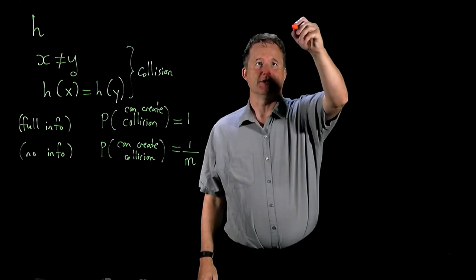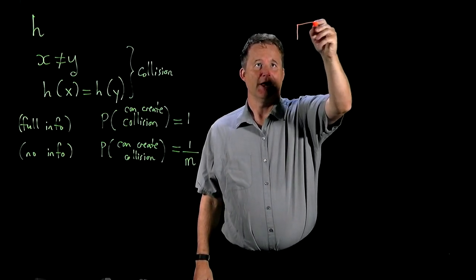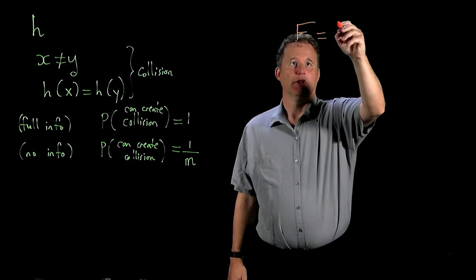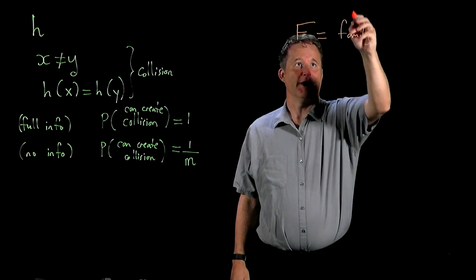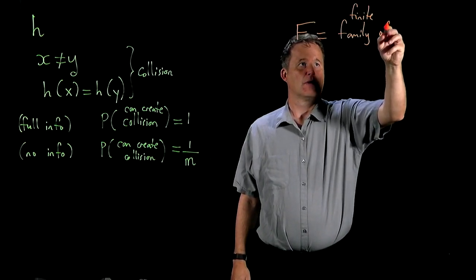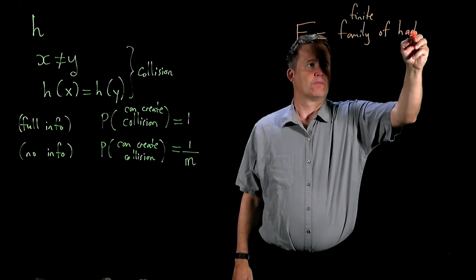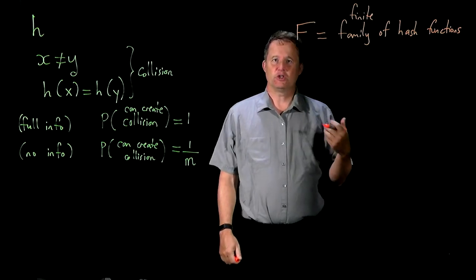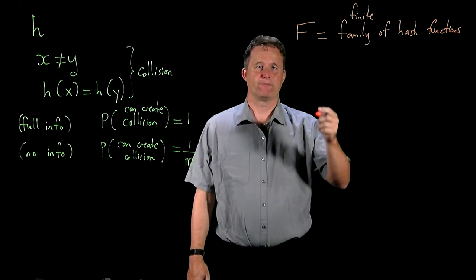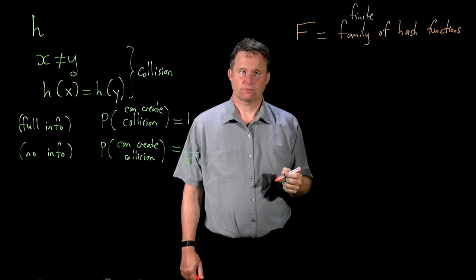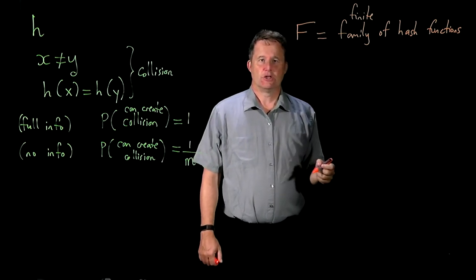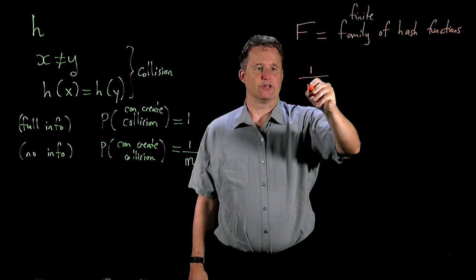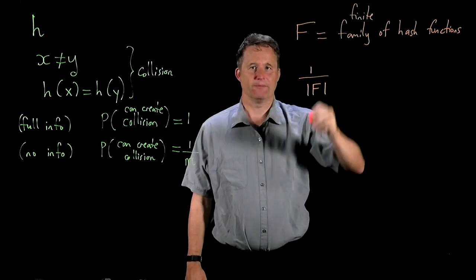Basically what we're going to do is this: we're going to have a set — or family — of hash functions. This set is finite. What we're going to do is choose the hash function randomly at runtime from this set. The probability that we get any particular function out of here is just 1 over the size of the set — we're choosing them uniformly at random.